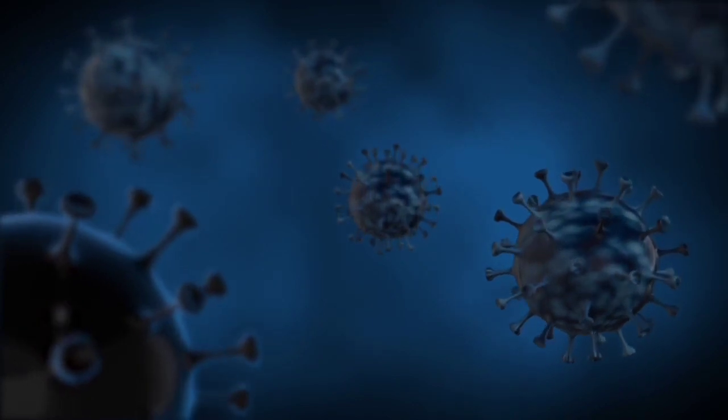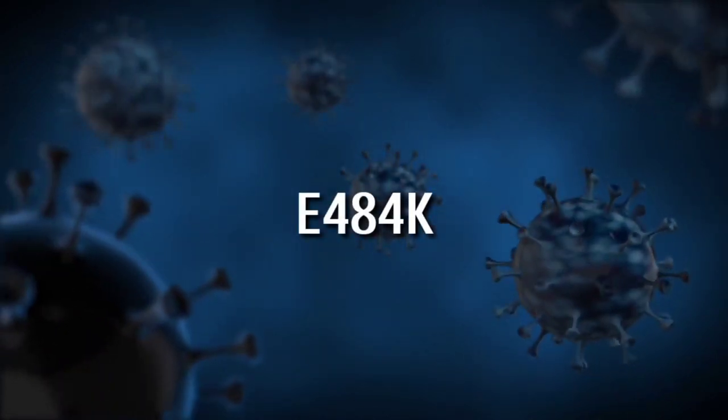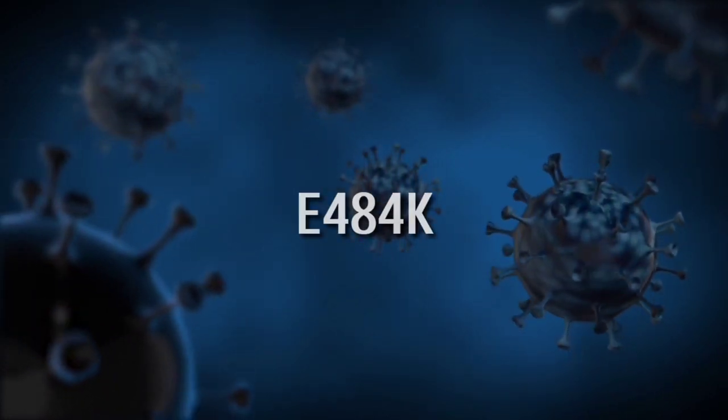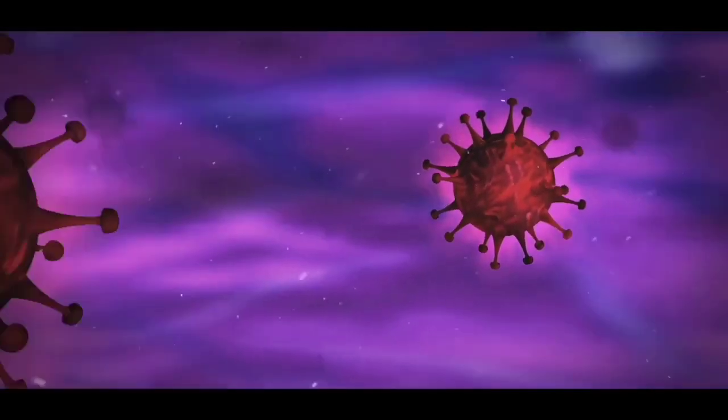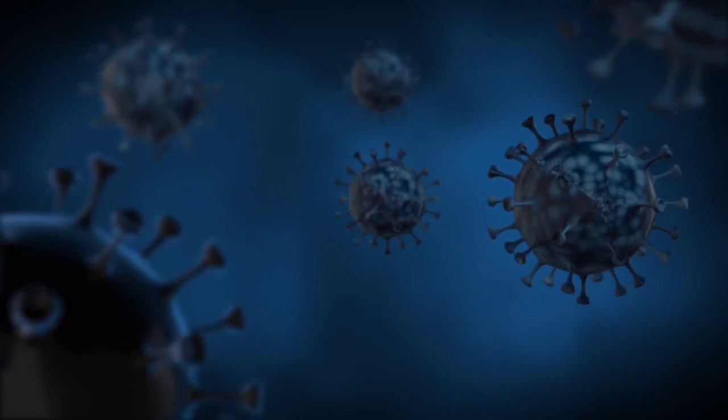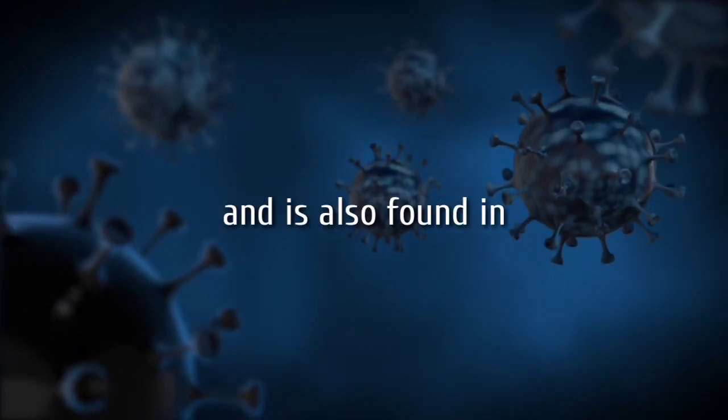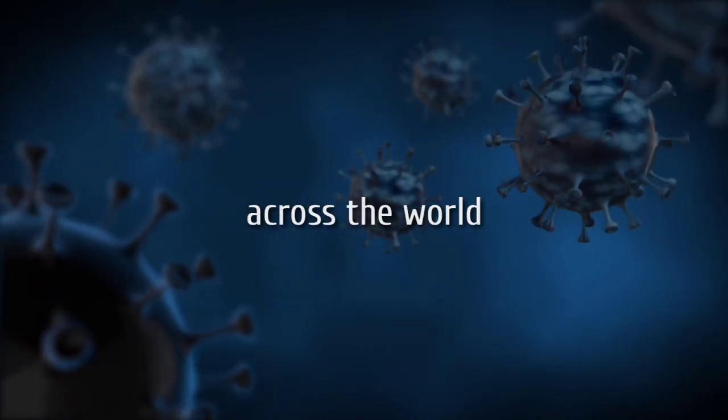One of these three mutations is E484K. This E484K mutation helps coronavirus to escape from our immunity cells. E484K is a major immune escape variant and is also found in a number of emerging lineages across the world.